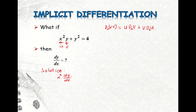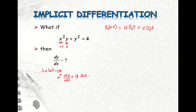Then plus the second factor, which is y — that is v — times the derivative of u, where u is x squared. So the derivative of x squared, applying the power rule, becomes 2 times x to the power 2 minus 1, which is 1, times the base x. So the derivative of x with respect to x. And then the right side: the derivative of the right side, which is a constant, is equal to 0.